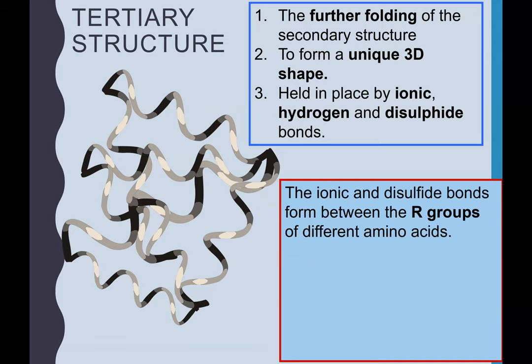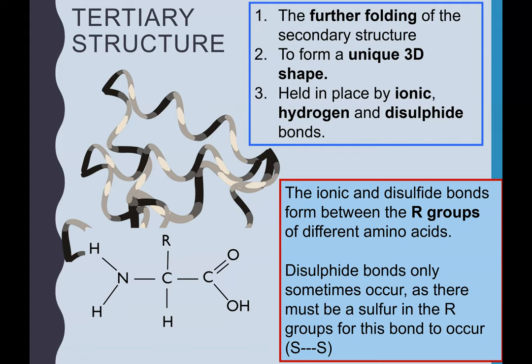But just to point out, again, you need to know the location of the bonds. This time, it forms between the R groups. So the ionic and disulfide bonds are located between different amino acids, but it's between their R groups. And a disulfide bond, di means two, so it's a bond that forms between two different sulfurs. You would only get a disulfide bond if you happen to have amino acids within the polypeptide chain which have a sulfur in their R groups.